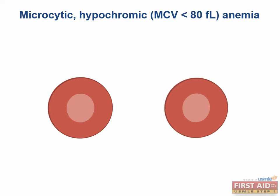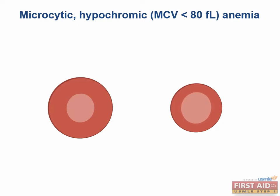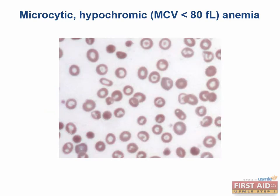In microcytic anemias, the RBCs are smaller than normal. They are also hypochromic — hypo meaning low and chromic meaning color — so they have less red color than normal cells. You'll notice a larger area of central pallor, as seen in this example. Remember that the average RBC should be approximately the size of a lymphocyte. The exam will often give you a lymphocyte as a comparison to note that cells may be smaller or larger.